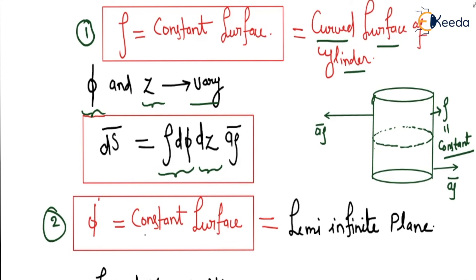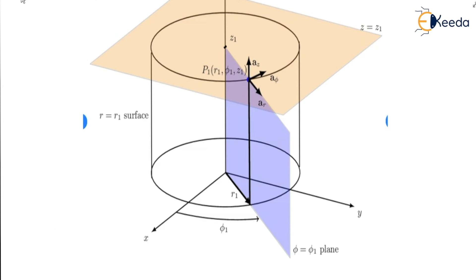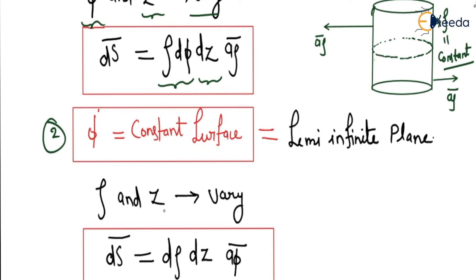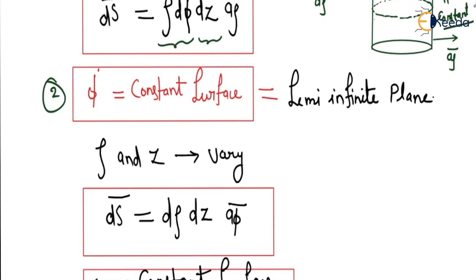The second surface is phi equals constant, which is a semi-infinite plane. As we can observe in the figure, the blue-colored plane is the phi equals constant plane, and it extends in a semi-infinite way. If phi is constant, phi will not vary, and rho and z will vary. The variation of rho is dρ and the variation of z is dz, so the ds vector is dρ dz aφ.